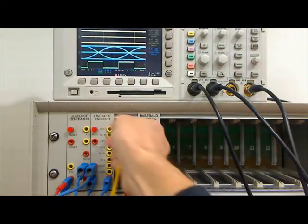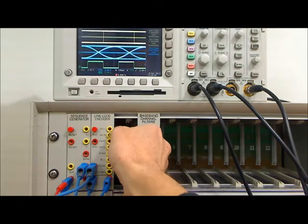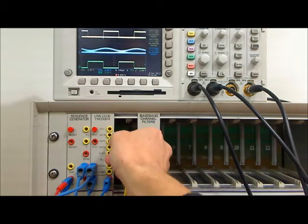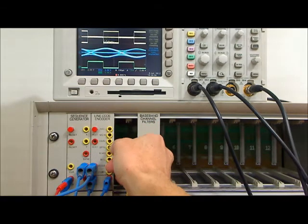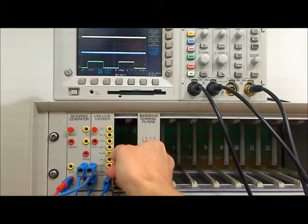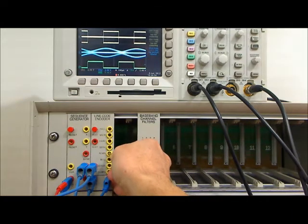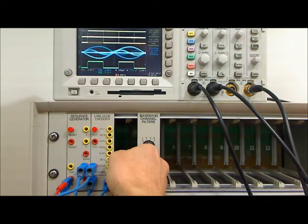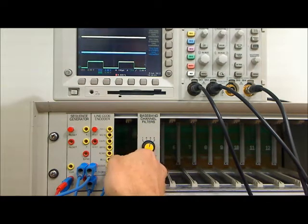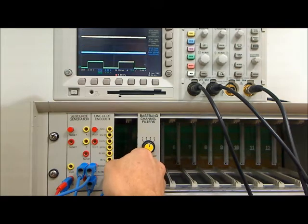Let's go through the line codes again as eye patterns: NRZL, NRZM, unipolar RZ, bipolar RZ, RZAMI, through level I, biphase Manchester, dicode, and duobinary partial response.